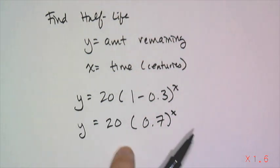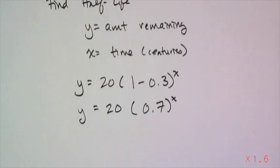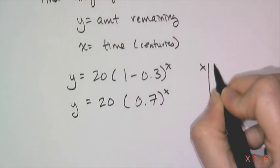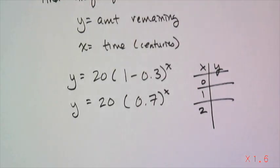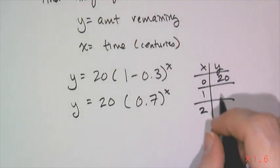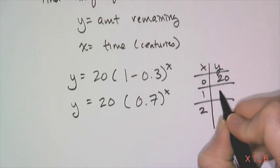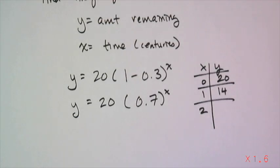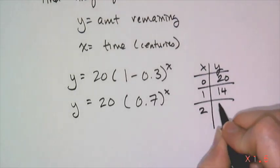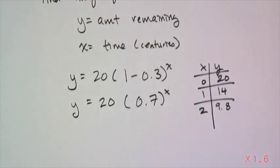If I want to find the half-life, I have to take this model and make a table. I don't have my graphing calculator with me, so I'm just going to make a little table by hand. So at time 0, I have 20. At time 1, I have to find 70% of 20, which is 14. Then at time 2, I need to find 70% of 14, which is 9.8.